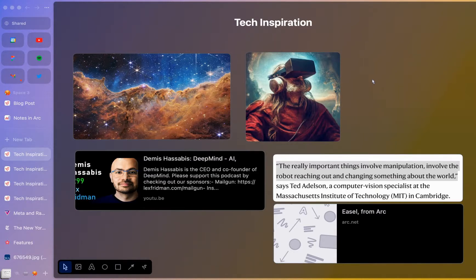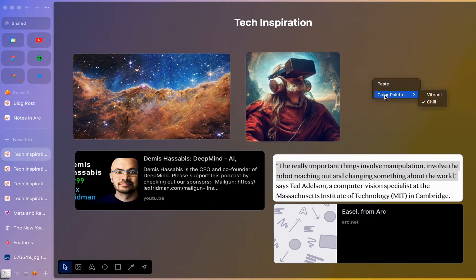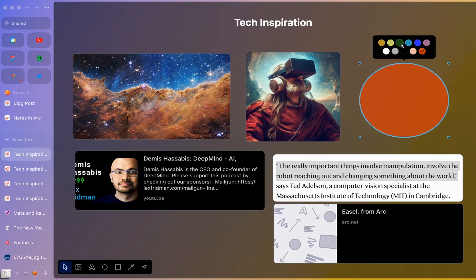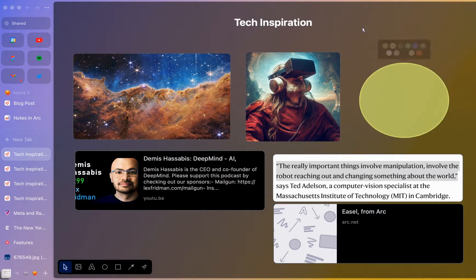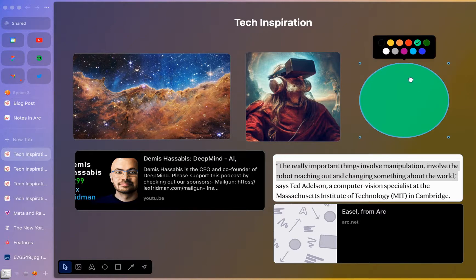One more feature to highlight here: maybe you didn't like the color palette. You can change it — so you can go from vibrant to chill, and that's going to change the colors and different options available to you for the different items that you put in there. You can see these colors will change — if I change the color palette to vibrant, we get a different set of options there.